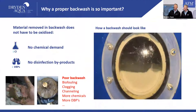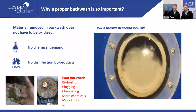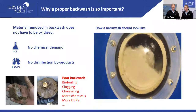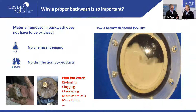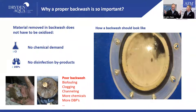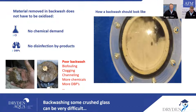A side glass is essential, especially in commercial filters, so you can see how the backwash looks. Whatever is not properly backwashed stays in the system, creates chlorine demand, produces disinfection byproducts, and leads to clogging and biofouling. Think of it like a bin that must be emptied regularly.